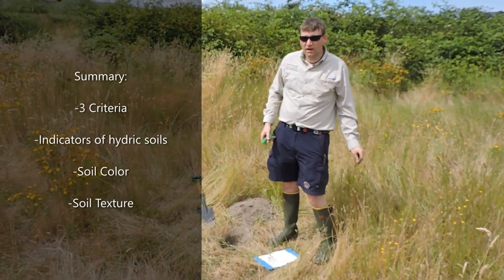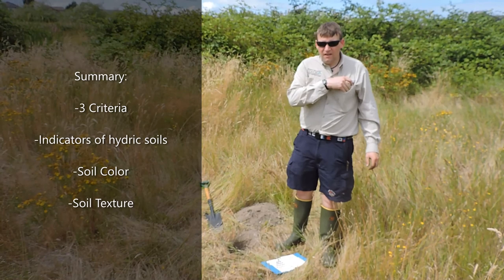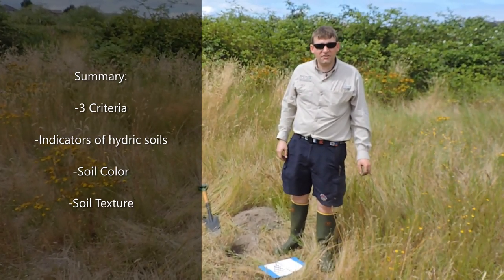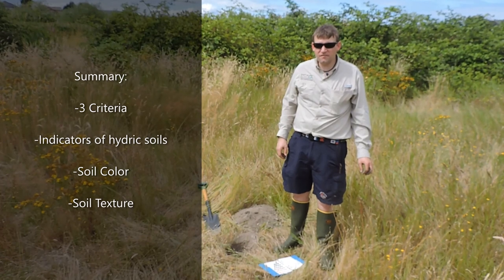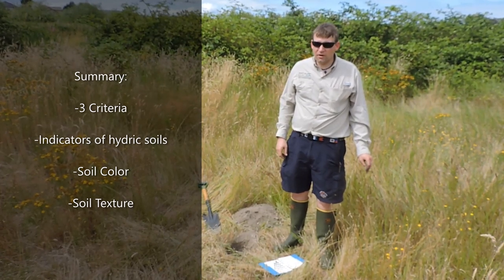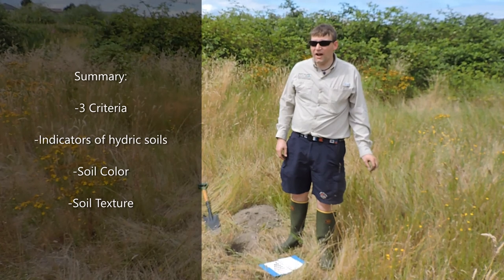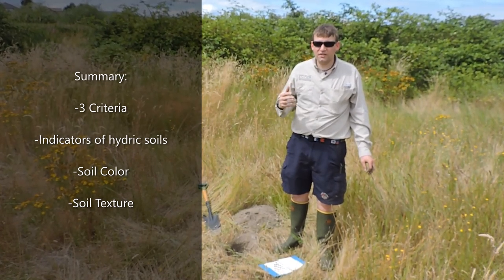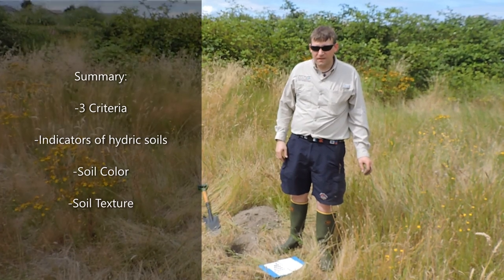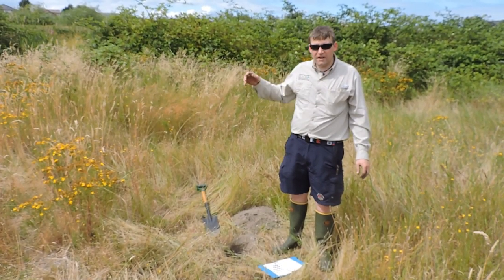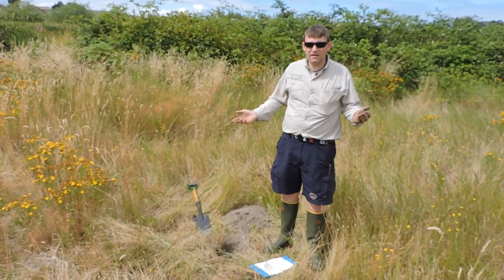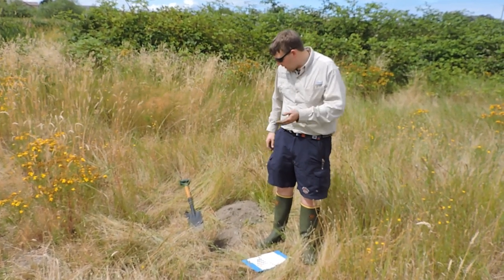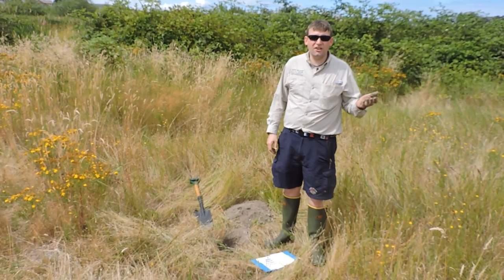To review what we covered in this video: we talked about the three criteria needed for wetlands — hydrology, hydric soils, and hydrophytic vegetation. We look for indicators of hydric soils primarily by examining the soil profile color and texture. What we observed was a very dark silt loam soil in the wetland, and in the upland, a much sandier and gravelly soil.